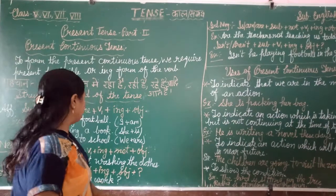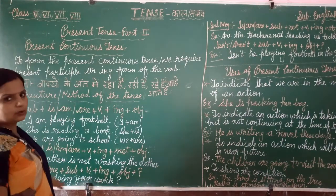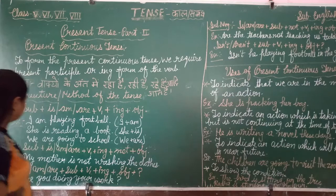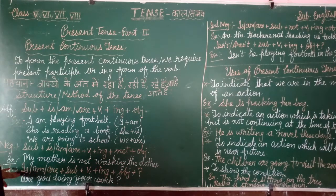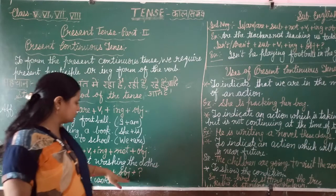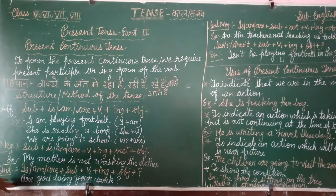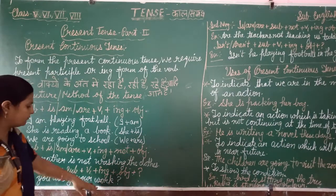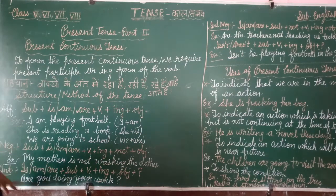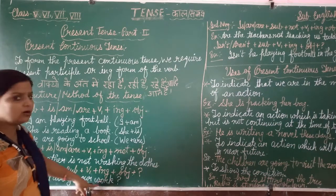Firstly, I tell you about the yes/no type questions and how we apply the rules. The structure is: is/am/are plus subject plus V1 plus ING plus object plus question mark. For example: are you doing your work? Here we use are, then subject you, then V1 plus ING, then object your work.